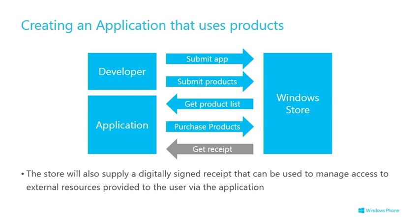The store will also give back to you a digitally signed receipt — a document that can't be tampered with because it has a digital signature on it. You can test that it hasn't been tampered with. You can incorporate that into your own content delivery systems and use it, for example, on your back-end systems to verify the digitally signed receipt and use that as a way of releasing to the end user whatever the product is that you're selling.